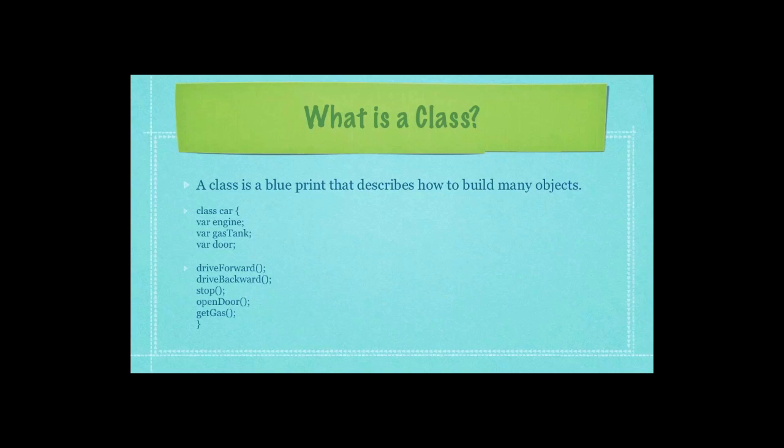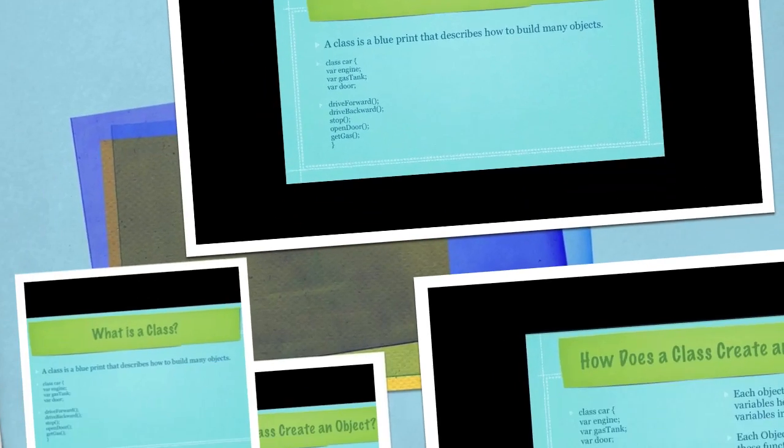You can see here, I defined the class with the keyword class, followed by car, then have an open curly bracket, followed by three variables: engine, gas tank, and door, which all cars would have, and then I gave this car class five functions that also every car would have.